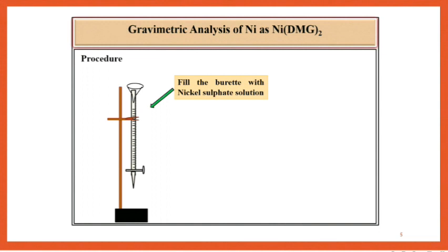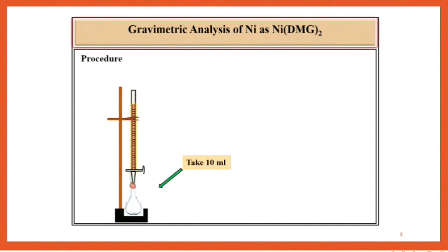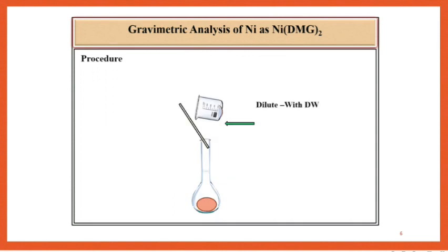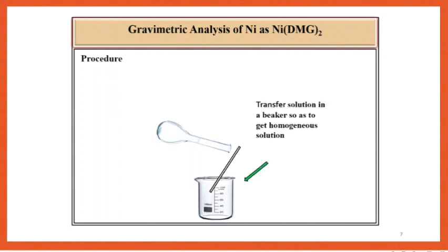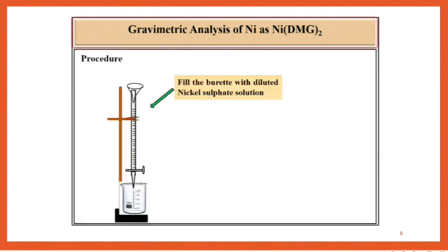Procedure: Fill the burette with nickel sulfate solution, and from this burette take 10 ml of nickel sulfate solution directly in a 100 ml volumetric flask. Then dilute this solution by using distilled water and make up the volume up to 100 ml. Thereafter pour this diluted solution in a 100 ml beaker so as to get a homogeneous solution. Then fill the burette with the diluted solution of nickel sulfate.